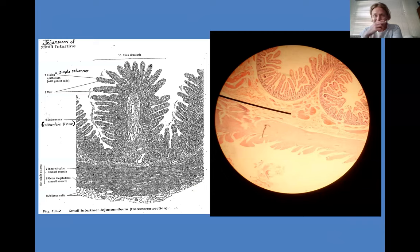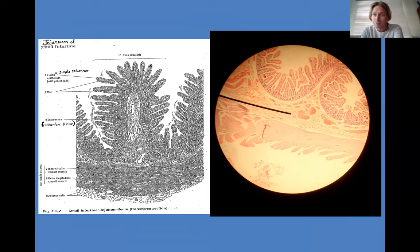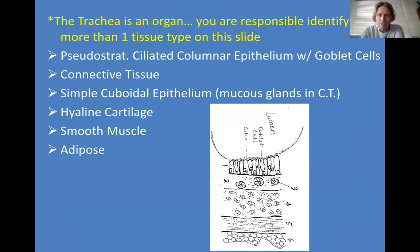You'll also need to know the different names for the layers in the trachea and jejunum — that will be on your list of things to identify. We'll go over that together in lab. The epithelial layer is usually called the mucosa, so the connective tissue underneath is the submucosa. Then we have the muscularis layer — the smooth muscle layer — made up of circular and longitudinal muscle.